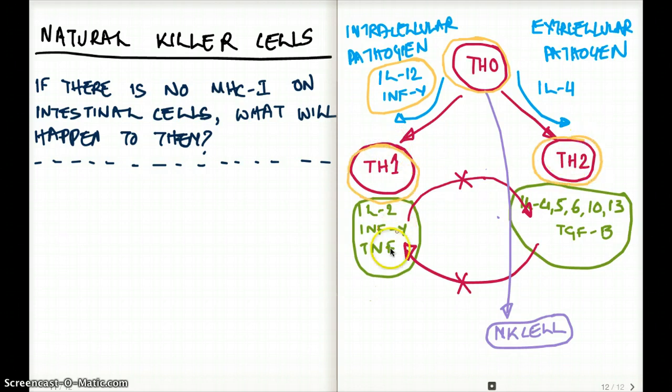Now we have T helper 1 here and T helper 2 here. Now T helper 1 makes three cytokines, IL-2, interferon gamma and TNF. What about T helper 2 cells? It makes a bunch of cytokines, IL-4, 5, 6, 10, 13 and TGF-beta.